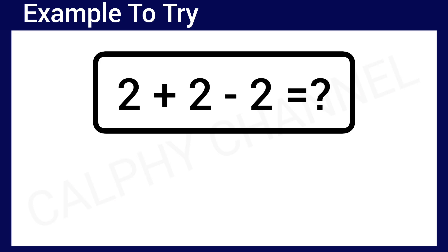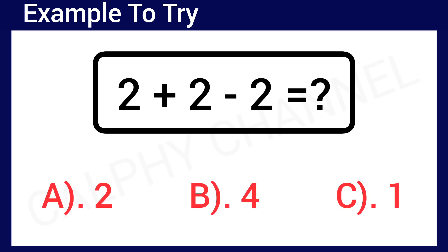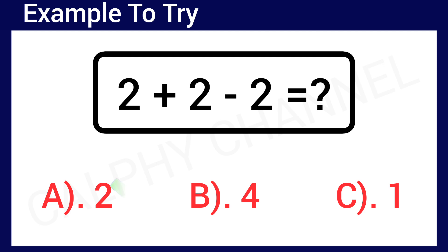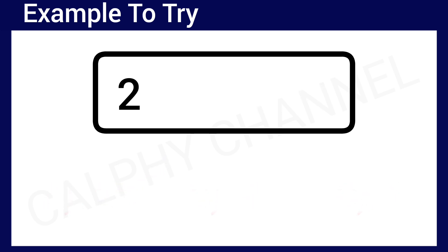Try your hands on this question: 2 plus 2 minus 2 is equal to what? If you know the correct answer, drop it in the comment section below. Option A: 2, Option B: 4, Option C: 1. The correct answer is Option A, which is 2. 2 plus 2 minus 2 is equal to 2.